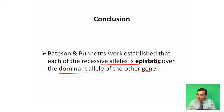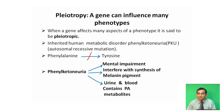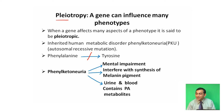Another interesting aspect of the mechanism of inheritance is pleiotropy. What is pleiotropy? Pleiotropy means a gene that influences many phenotypes. When a gene affects many aspects of a phenotype, it is said to be pleiotropy.